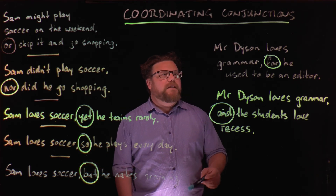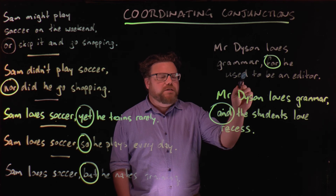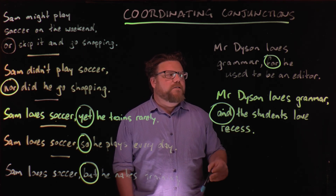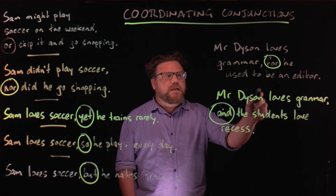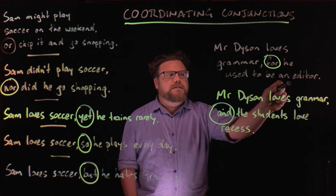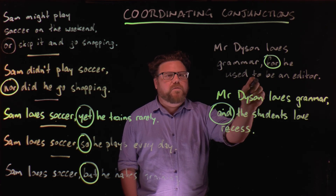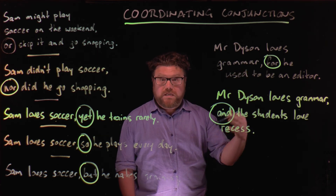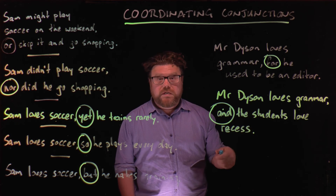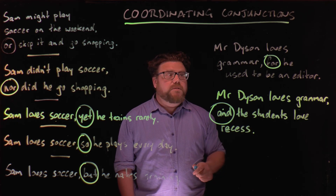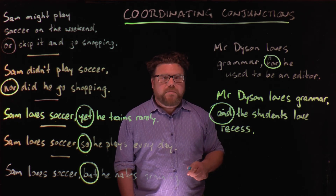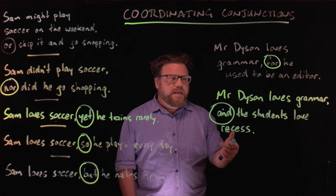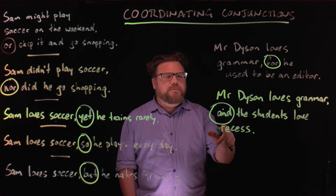Up here we've got: Mr. Dyson loves grammar, for he used to be an editor. Here the second independent clause is explaining why the first independent clause is true. Mr. Dyson loves grammar — the reason for that is that he used to be an editor.